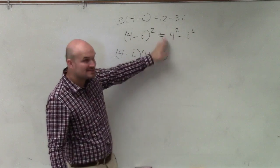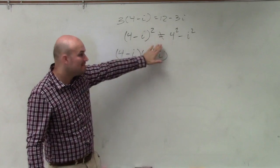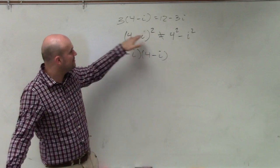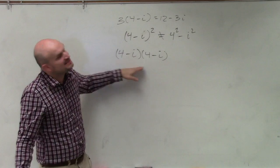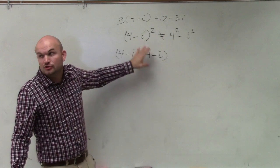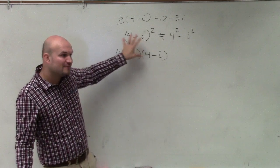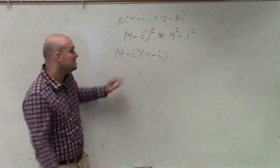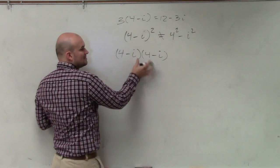So please, if that's what you did, write that down and put a big X and say remember, (4 - i)² is (4 - i) times (4 - i). It's a huge, big misconception that everybody seems to make, even my pre-calculus students.